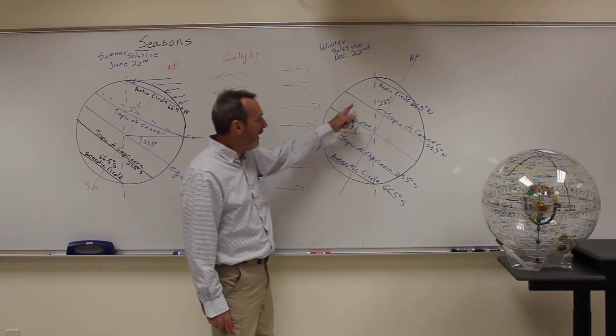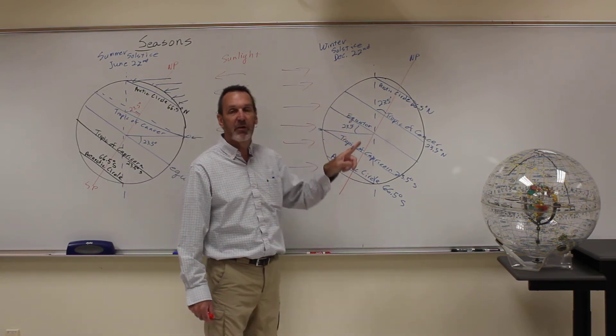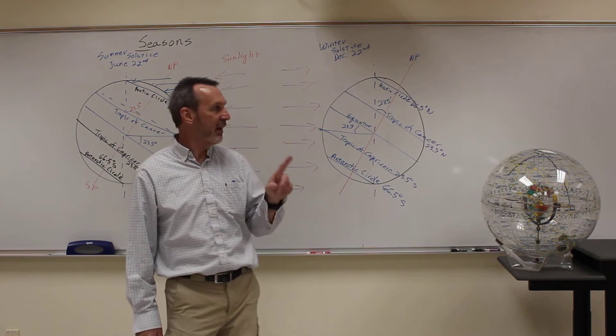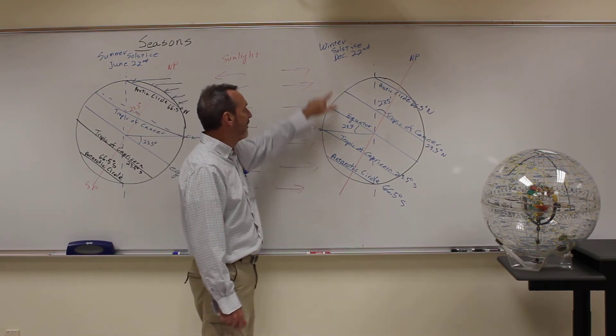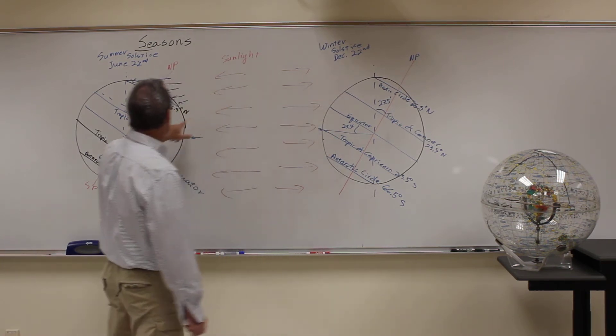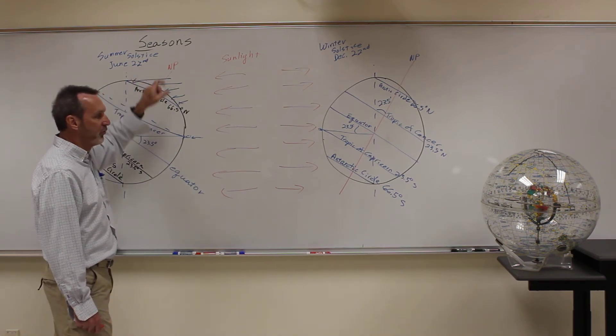Now, if you live right on the tropics, it only occurs once a year. It occurs exactly on that day. Tropic of Capricorn occurs on December 22nd. Tropic of Cancer occurs on June 22nd.